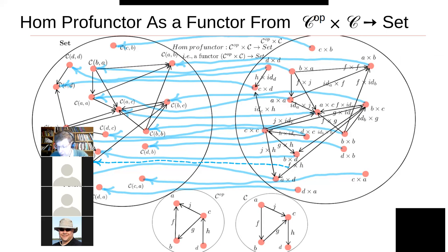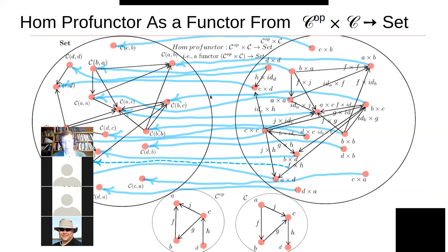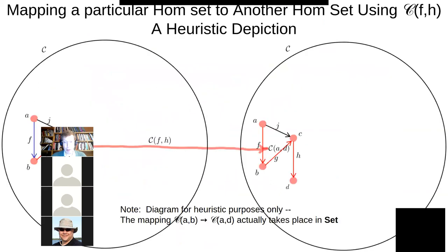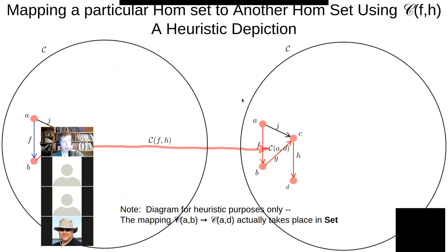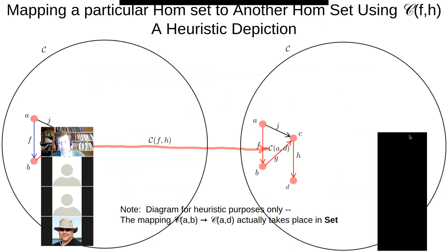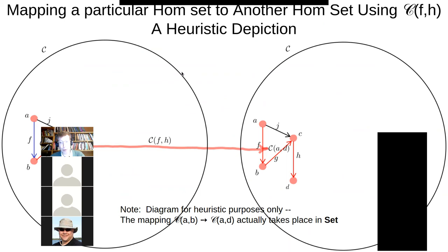Any questions about that before I start talking about some of these other components? Anyone want to ask questions about this idea of extending things that the profunctor accomplishes with dimap, or express puzzlement on that?